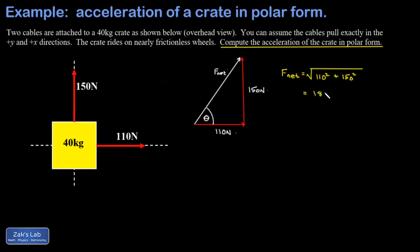We also want the direction of the net force because that's the direction the crate will accelerate. This angle theta is the angle whose tangent is 150 over 110. That's how you say the inverse tangent function: the angle whose tangent is this opposite over adjacent, 150 over